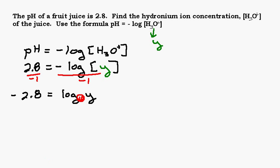So we need to change that to exponential form, which means we're going to take our base, which is 10, and 10 is going to go to this power, negative 2.8, and it's going to equal Y. That's how you change from log form to exponential form. So this log form is equivalent to 10 to the negative 2.8 equals Y.